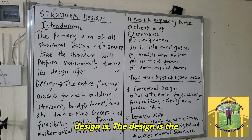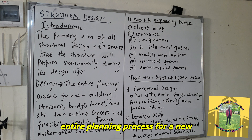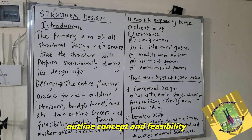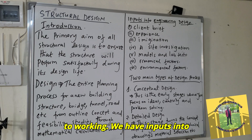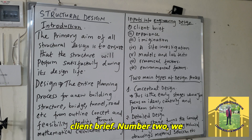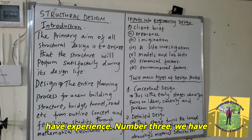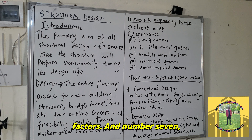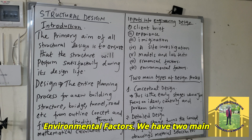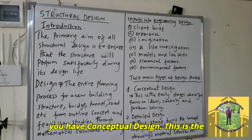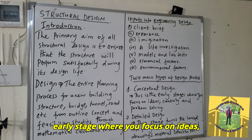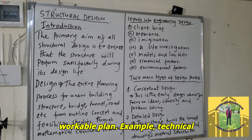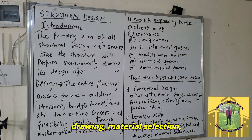Design is the entire planning process for a new building, structure, bridge, tunnel, roads, etc., from the outline concept and feasibility studies through mathematical calculation to working drawings. Inputs into engineering design include: client brief, experience, imagination, site investigation, models and lab tests, economical factors, and environmental factors. There are two main types of design process: conceptual design — the early stage focusing on ideas, creativity and problem solving — and detail design, which turns the concept into a fully workable plan including technical drawings and material selection.